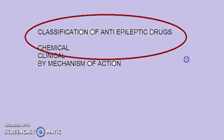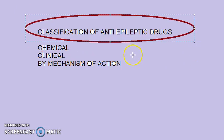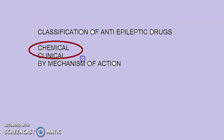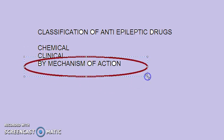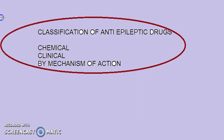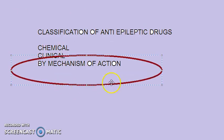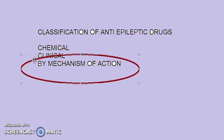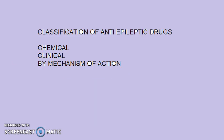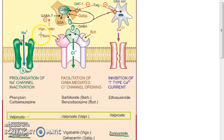We were looking at the classification of anti-epileptic drugs. We have seen the chemical classification and the clinical classification. Now by mechanism of action also we can look at the classification of anti-epileptic drugs. Basically, the overall mechanism is that neurons should be inhibited. There are three things that can be done, as shown in this diagram.